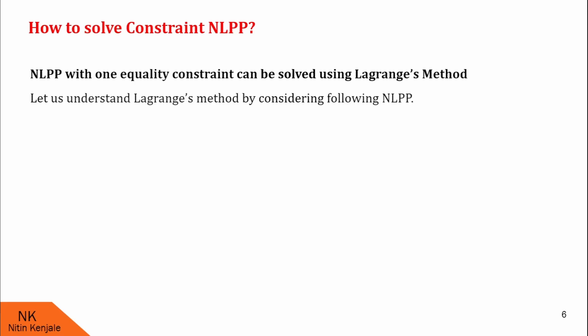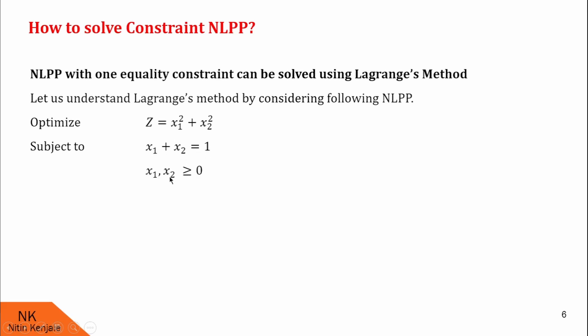Let us understand Lagrange's method by considering the following NLPP. Here we have to optimize z = x1² + x2², subject to the constraint x1 + x2 = 1, given that x1 and x2 are both non-negative. So this is our NLPP, and we have to solve it using Lagrange's method. Let us proceed with step 1.